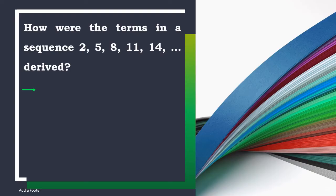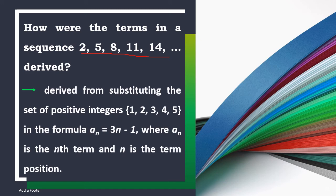How about the terms in the sequence 2, 5, 8, 11, 14, and so on? They were derived by substituting the set of positive integers 1, 2, 3, 4, 5 into the formula a sub n equals 3n minus 1, where a sub n is the nth term and n is the term position.